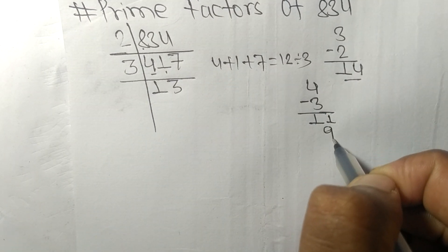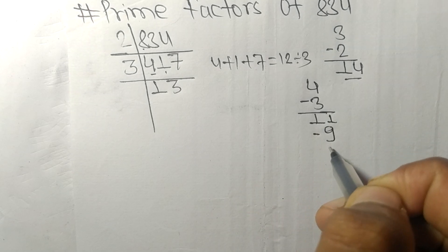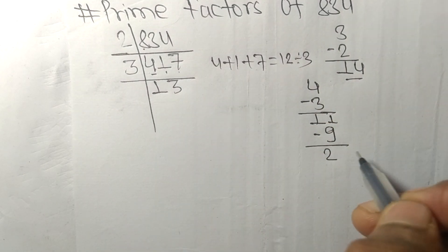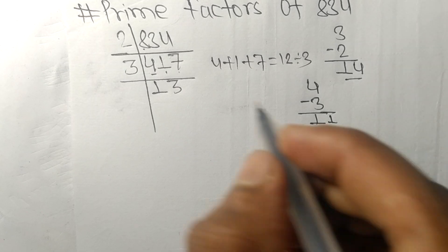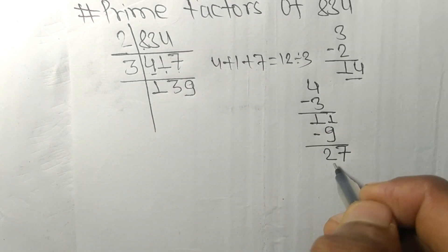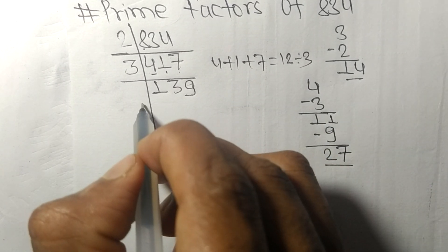On subtracting we get 2, and this becomes 27. 3 times 9 means 27.